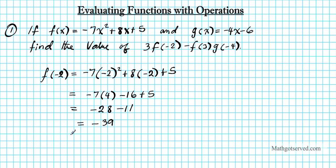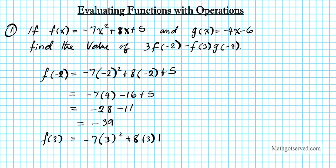So that's f of negative 2. Next we're going to find f of 3. f of 3 basically means what you get when you plug in 3 into this function. So we have negative 7 times 3 squared plus 8 times 3 plus 5.